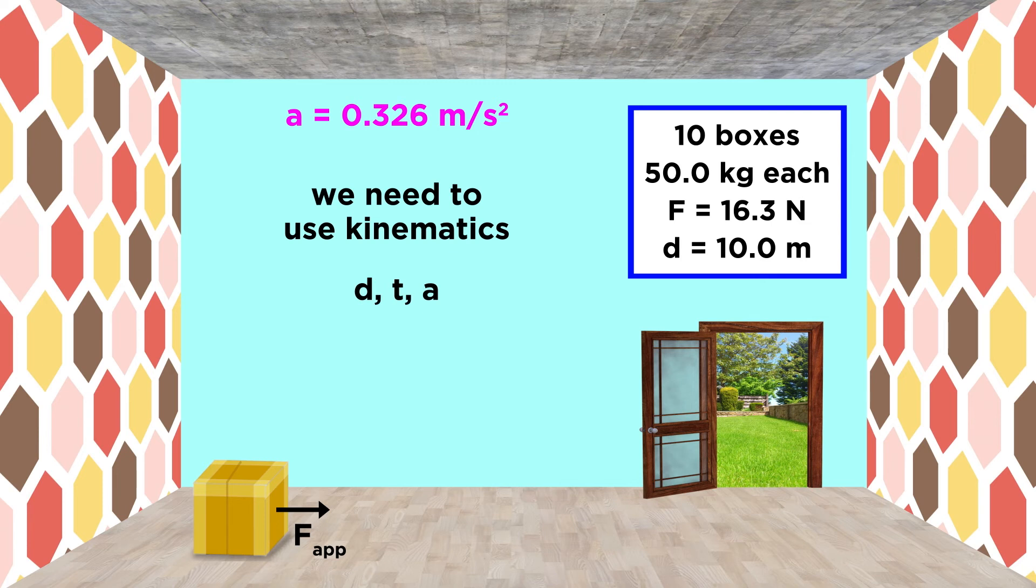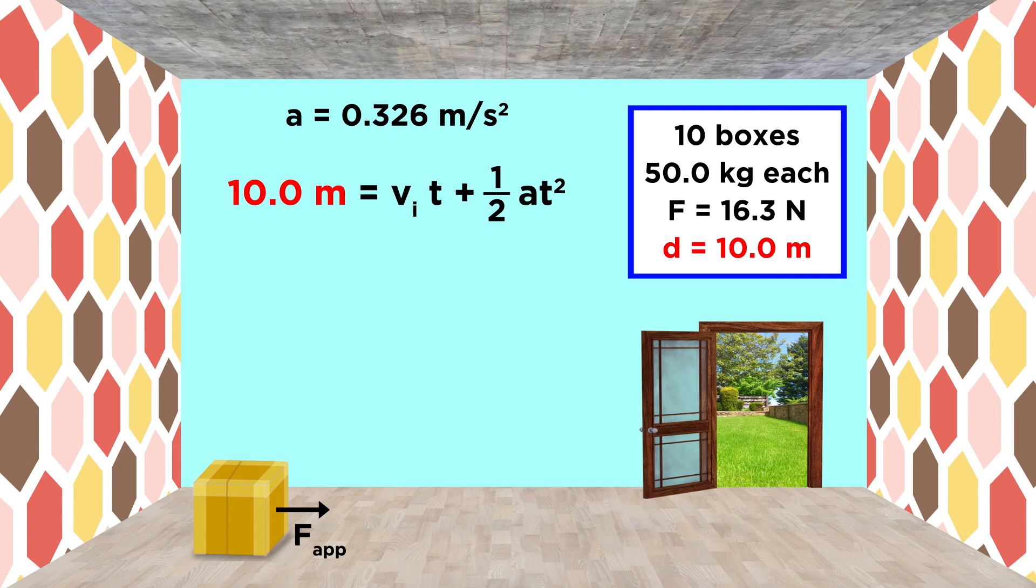We need one with distance, time, and acceleration, as these are the three variables we are interested in. Let's try this one. Plug in ten meters for the distance. Initial velocity will be zero, since we are starting from rest, which means this term goes away, and the acceleration is the one we just calculated.